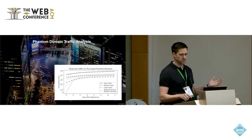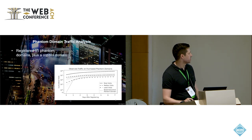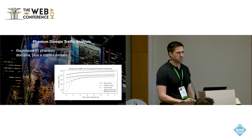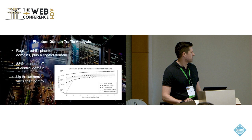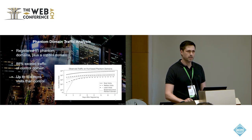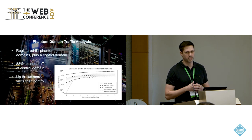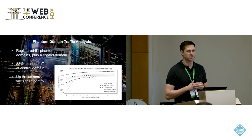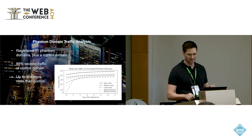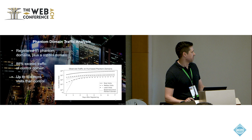We wanted to make sure these domains actually receive more traffic than a random domain, so we purchased 51 of them — one from each error category plus a control domain, just a randomly purchased domain. We found that 88% of them exceeded the traffic of the control domain, with up to 10 times more traffic than the control. Our results are slightly limited because we had to get ethics approval — the real test would be to actually try to fish user data, but we decided not to do that. If we had put a real page rather than a zero-length blank page, we'd likely see even more impressive results.